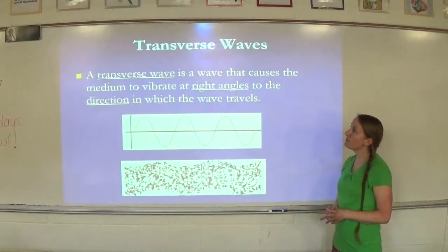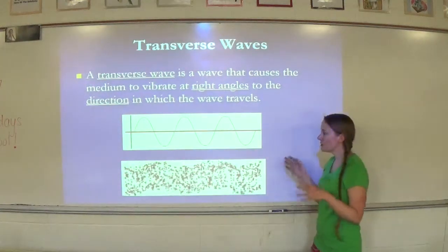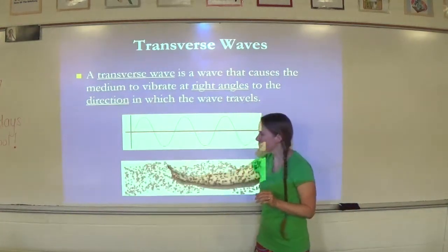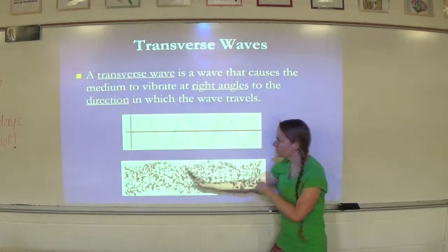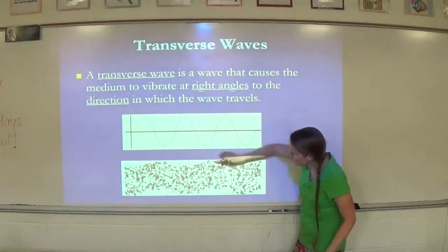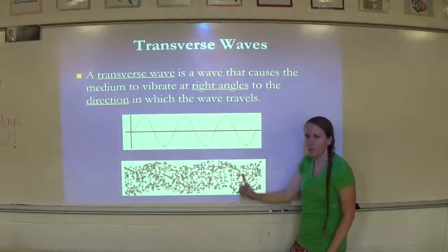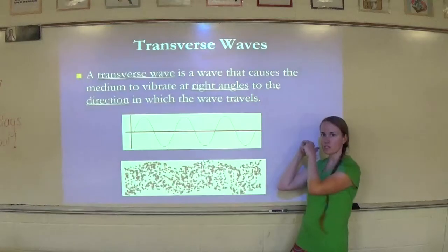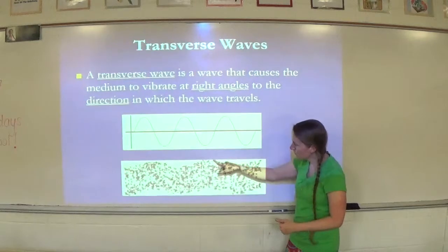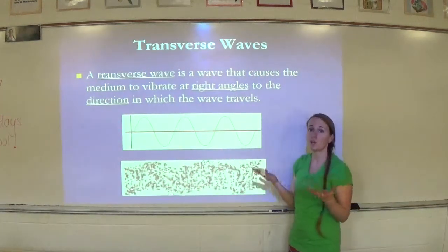A transverse wave is a wave that causes the medium to vibrate at right angles to the direction at which the wave travels. So if you look, the wave is clearly traveling this direction. See how I'm following the waves? The wave is traveling this direction. But what are the particles doing? All this particle is doing is going up and down, but the wave is traveling this way. So that's why it's at a right angle to each other. The wave and the particles vibrate at right angles to each other.